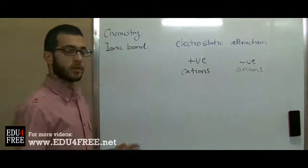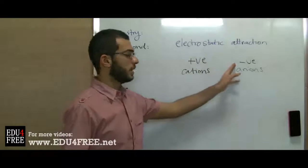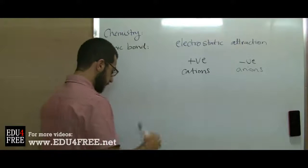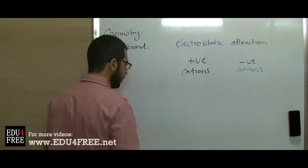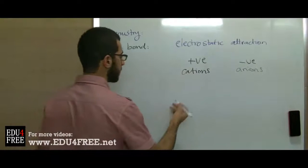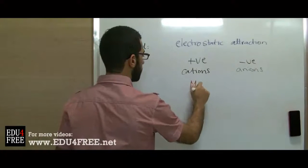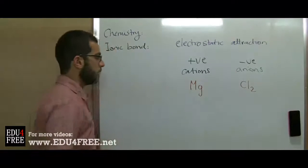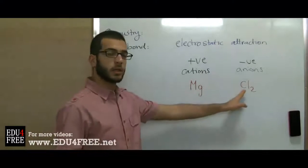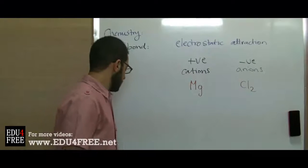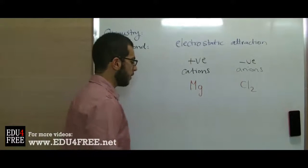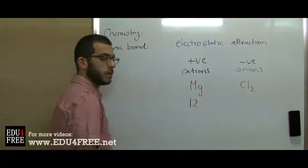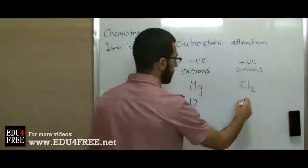So attraction occurs between positive and negative ions, forming the compounds. Let's have an example: magnesium chloride, MgCl₂ — magnesium and chlorine. The atomic number of magnesium is 12 and the atomic number of chlorine is 17.